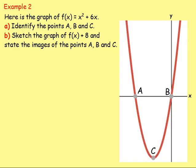Let's look at example two. Here is the graph of f of x equals x squared plus six x. First, identify the points a, b, and c. One student suggests that a equals zero, zero — and that's correct. Because points a and b lie on the x-axis, the y value equals zero there.